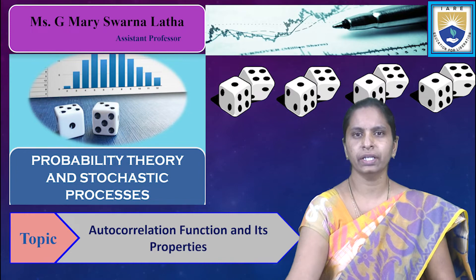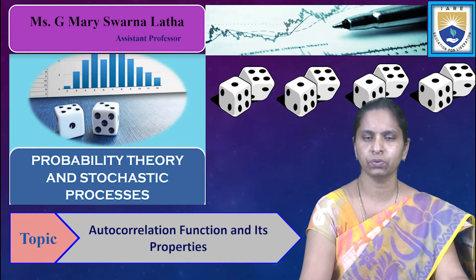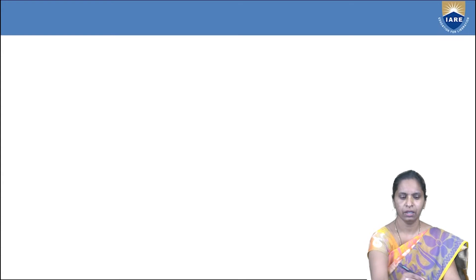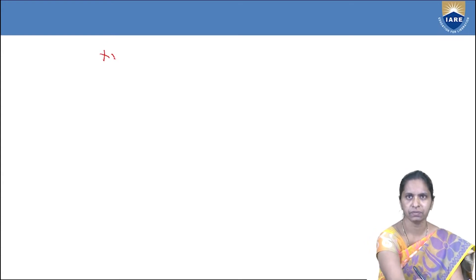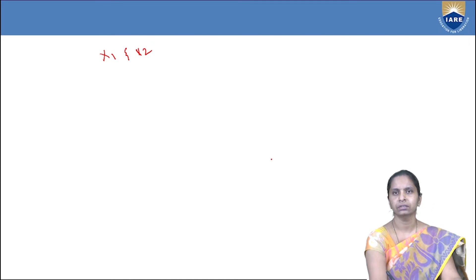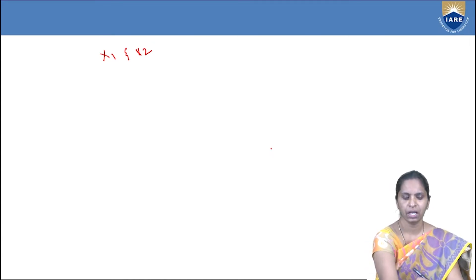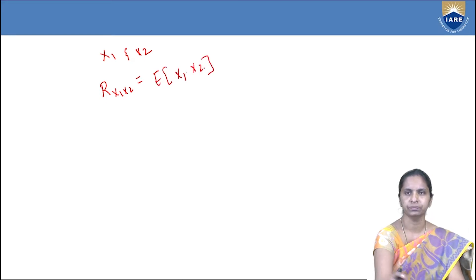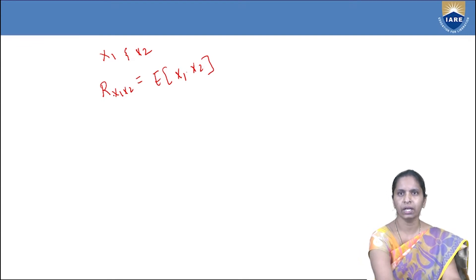What is correlation? Already in the previous lecture, we have seen the concept of correlation. Correlation is nothing but measuring the similarity between two quantities. If we are having two random variables x1 and x2, then the correlation between these two random variables has been represented by r_x1_x2 = E[x1 * x2]. This is called the correlation between two random variables x1 and x2.